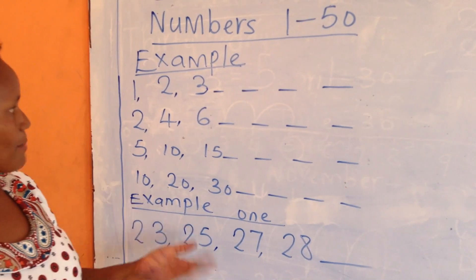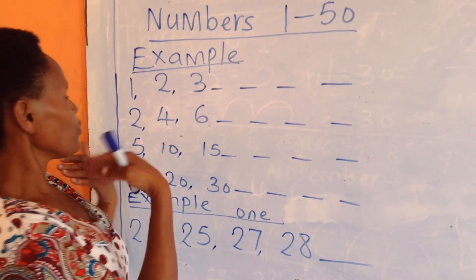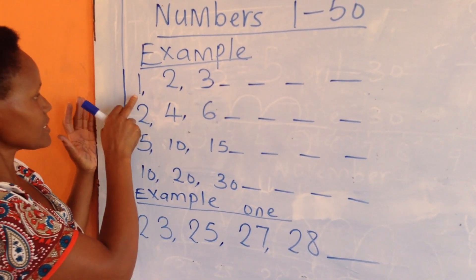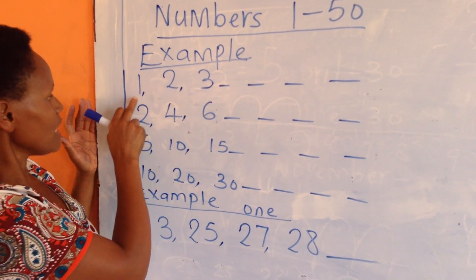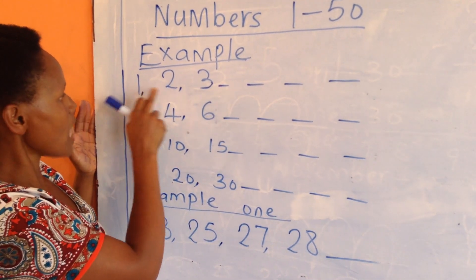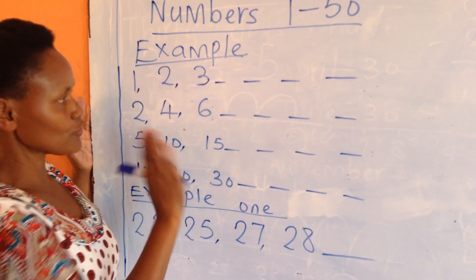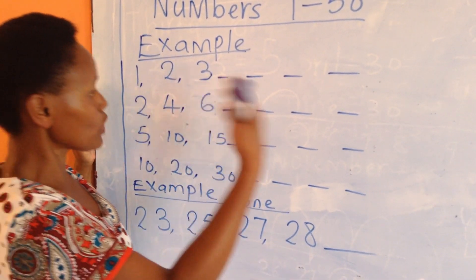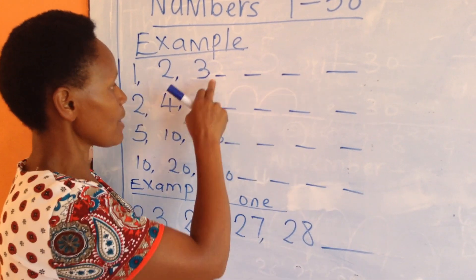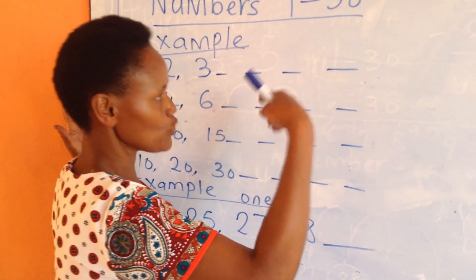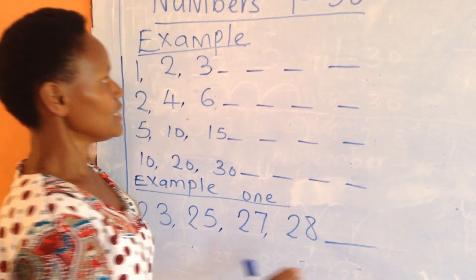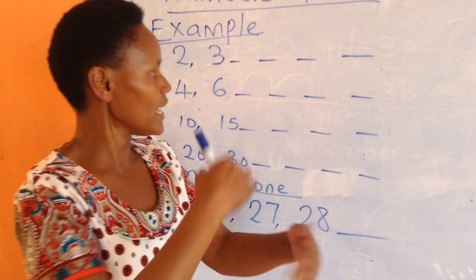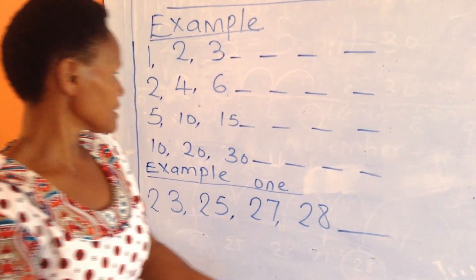We can arrange the numbers without skipping any number. Like in my first example, I've written 1, 2, 3 — I've not skipped any number. You can still continue with number 4, 5, 6, 7, you continue. That's number pattern: the way you arrange the numbers.